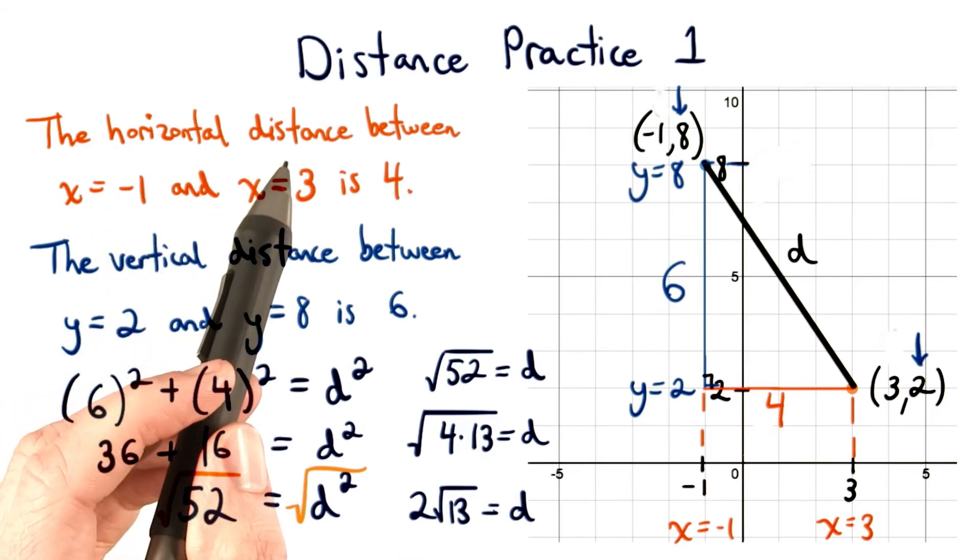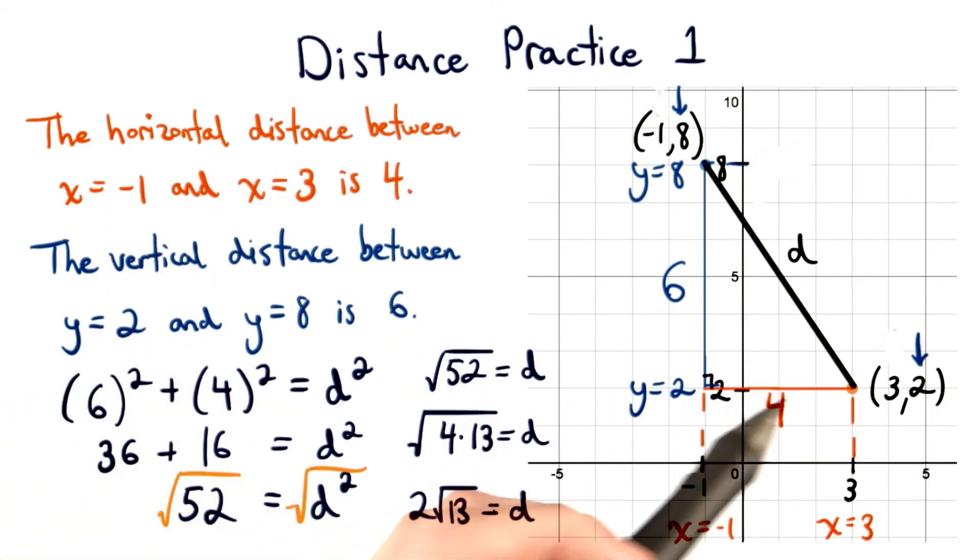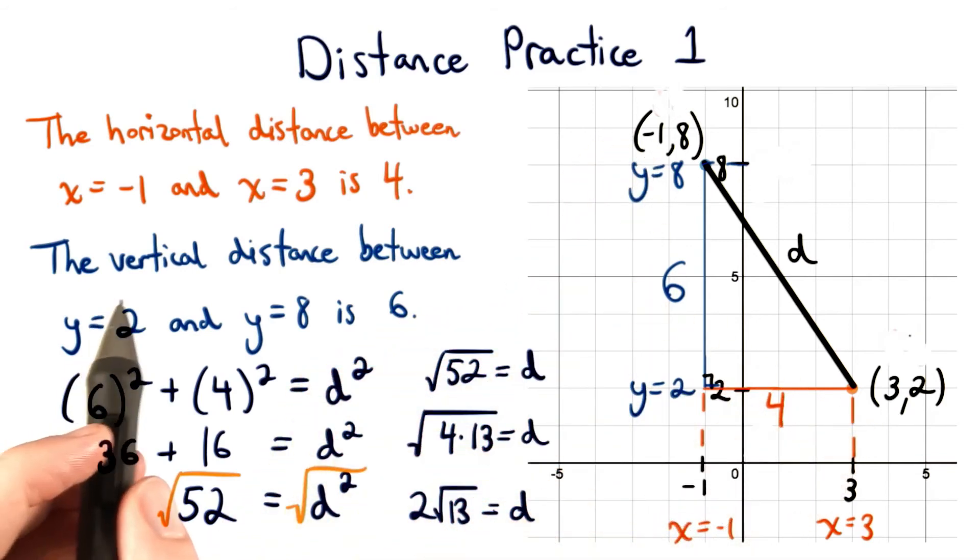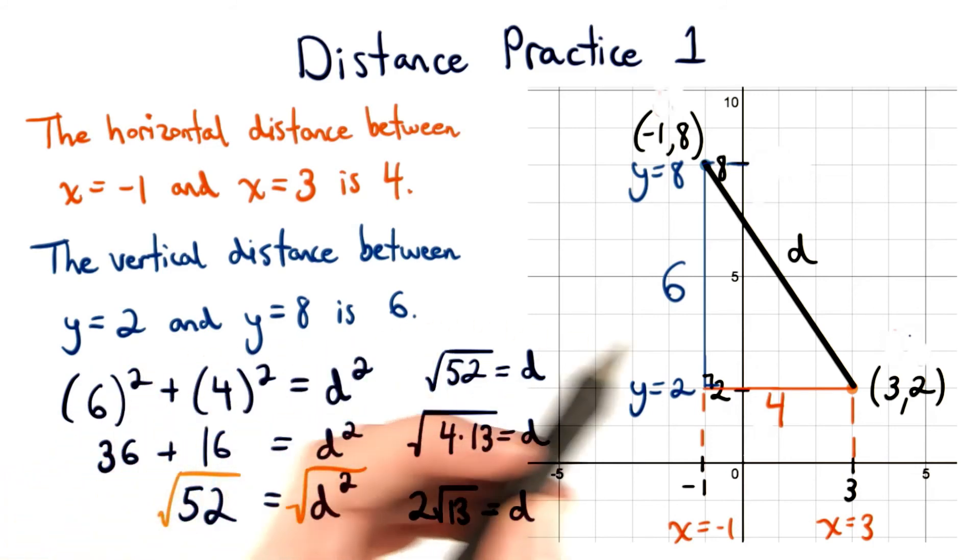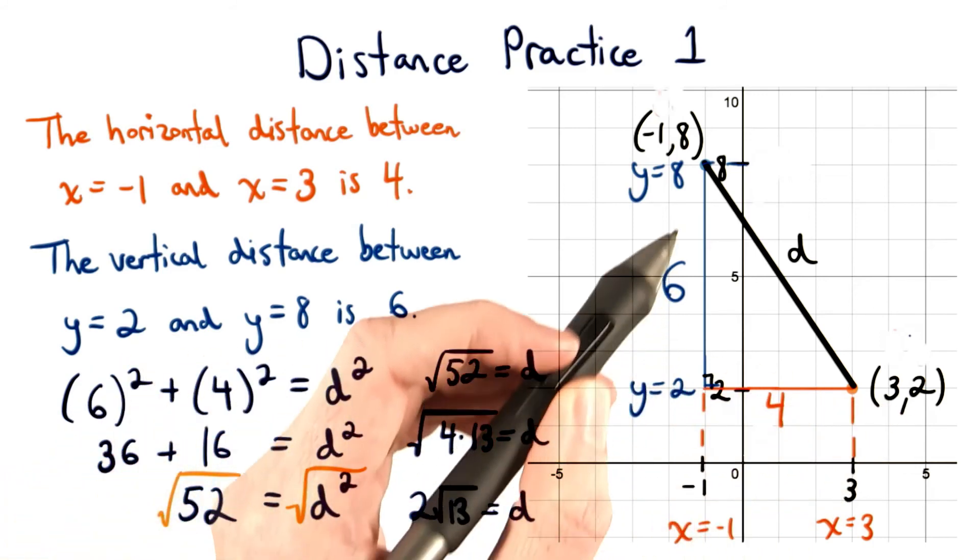And again, notice that the horizontal distance is simply the change in the x values. We went from x equals negative 1 to x equals 3. And notice that the vertical distance was the change in the y values. We went from y equals 2 all the way up to y equals 8.